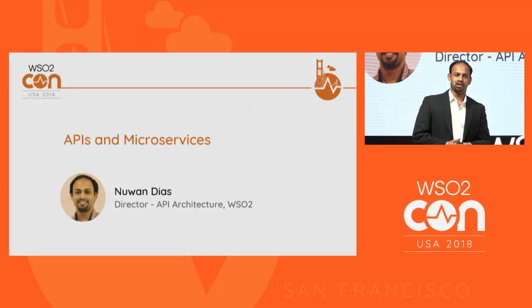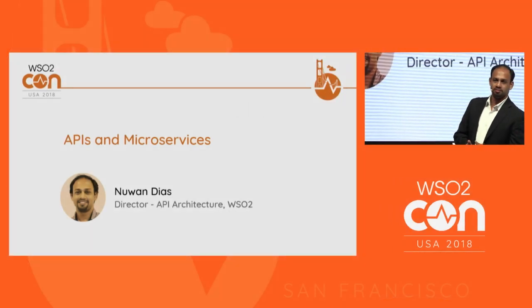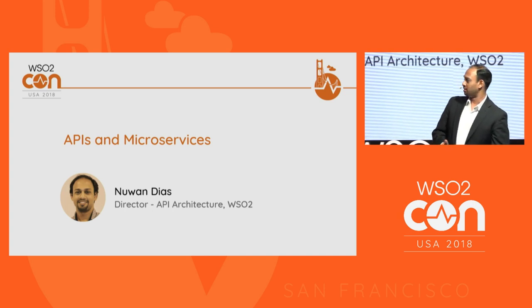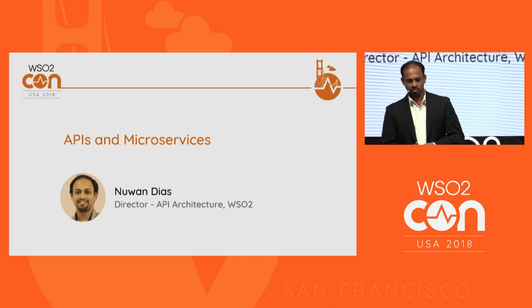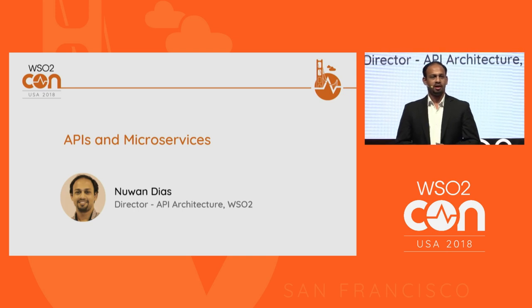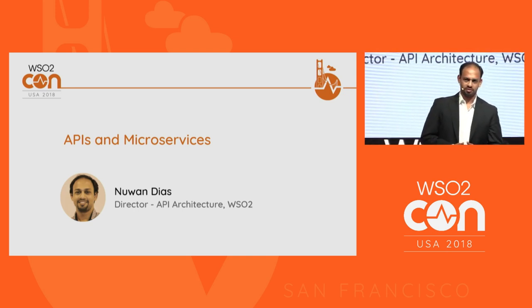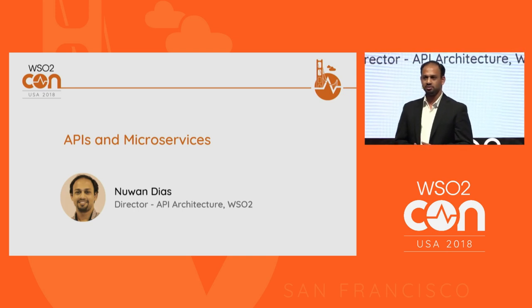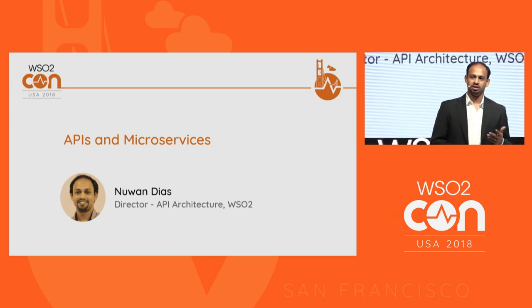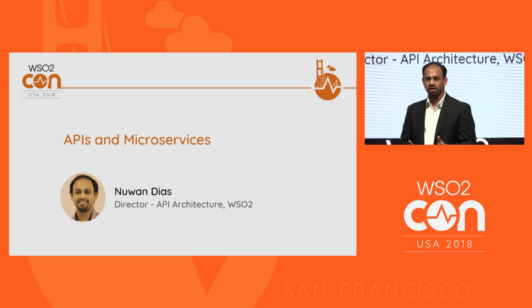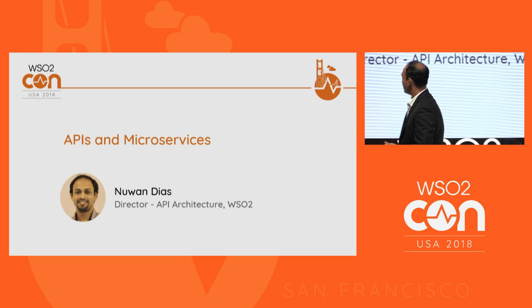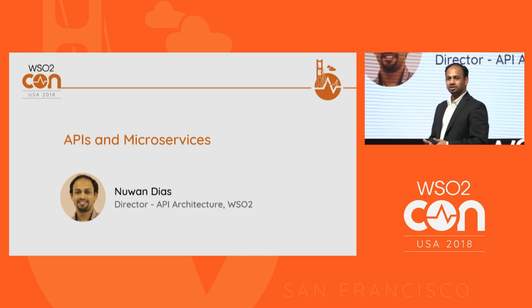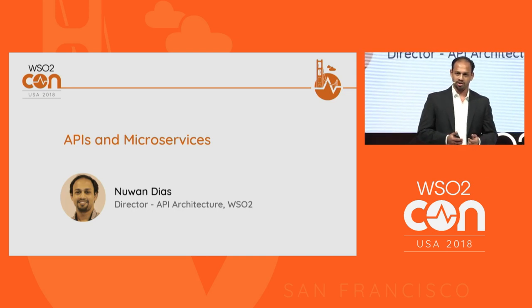Thanks, Asma, and thank you everybody for being here. Like Asma said, my name is Nuan Dias. I work as the director of API architecture at WSO2. I've been around in the company for close to seven years now. I started off in the ESB team for about one and a half years, then transitioned to the API manager team, and I've been stuck there since. Today I'll be talking about APIs and microservices.